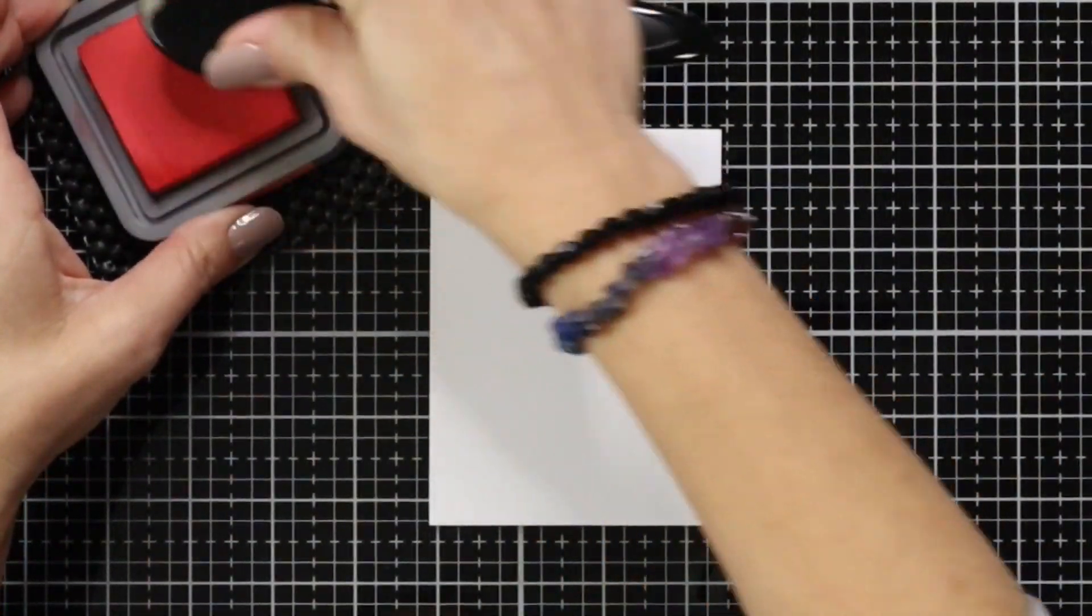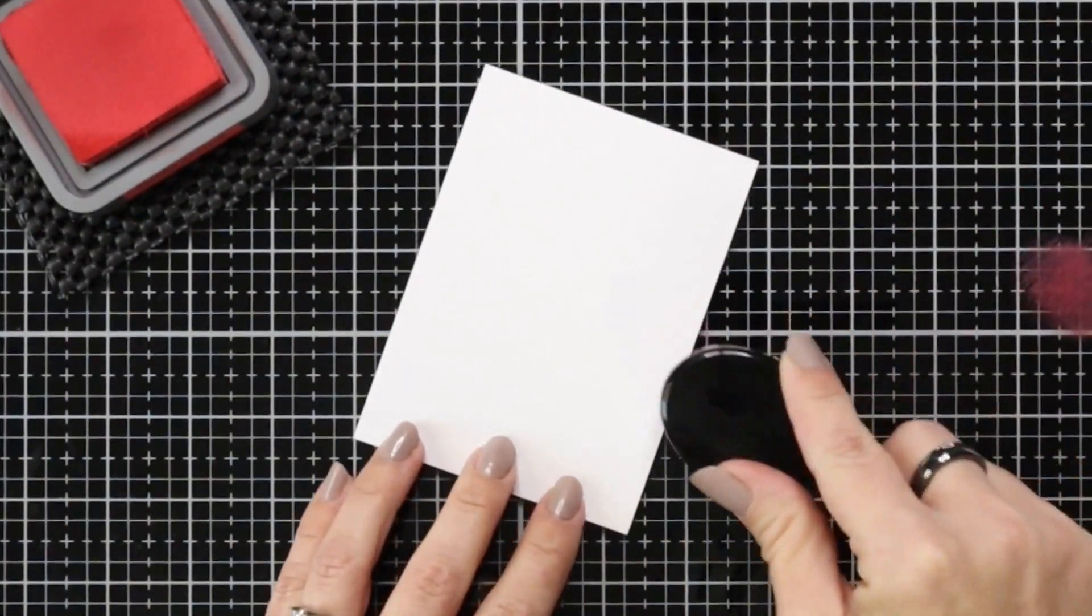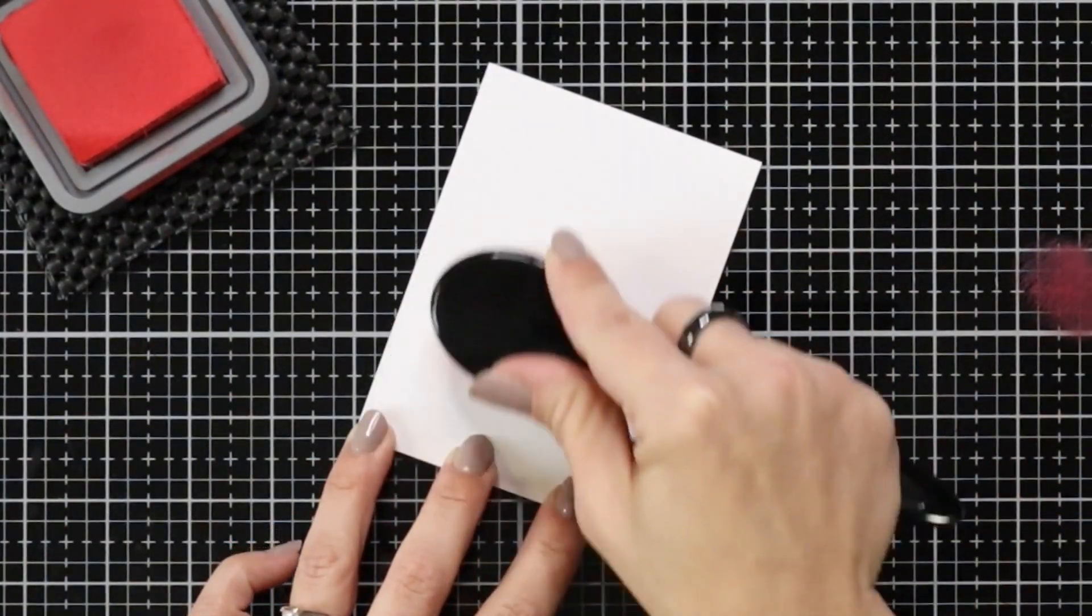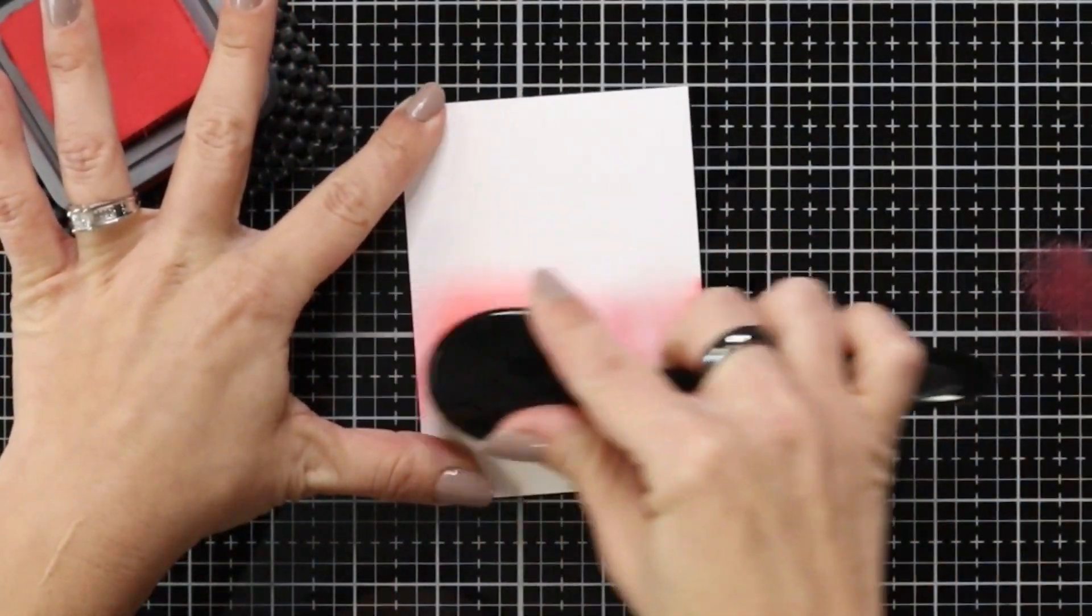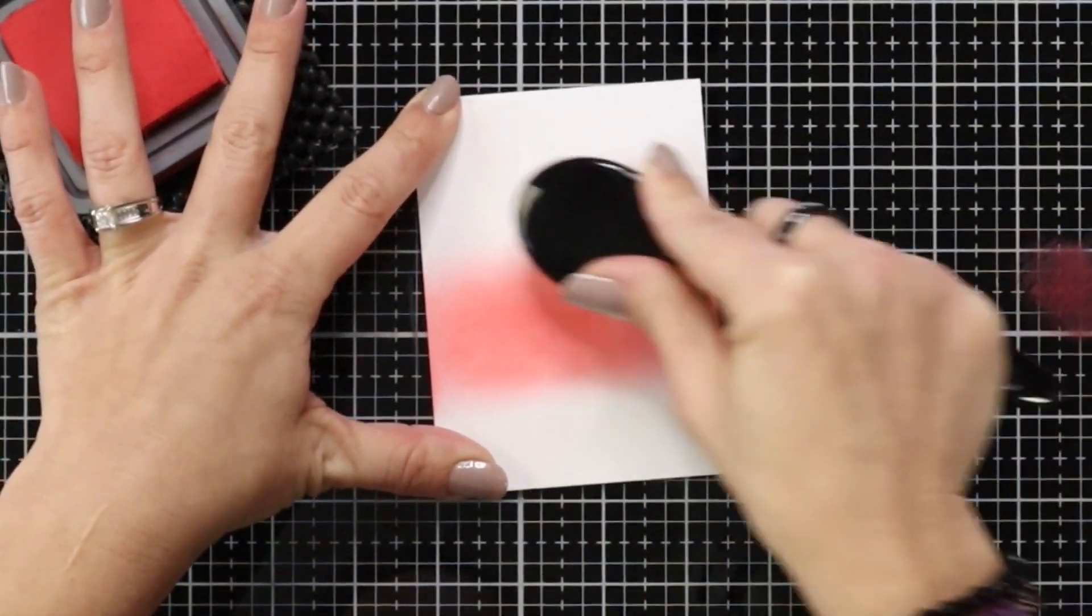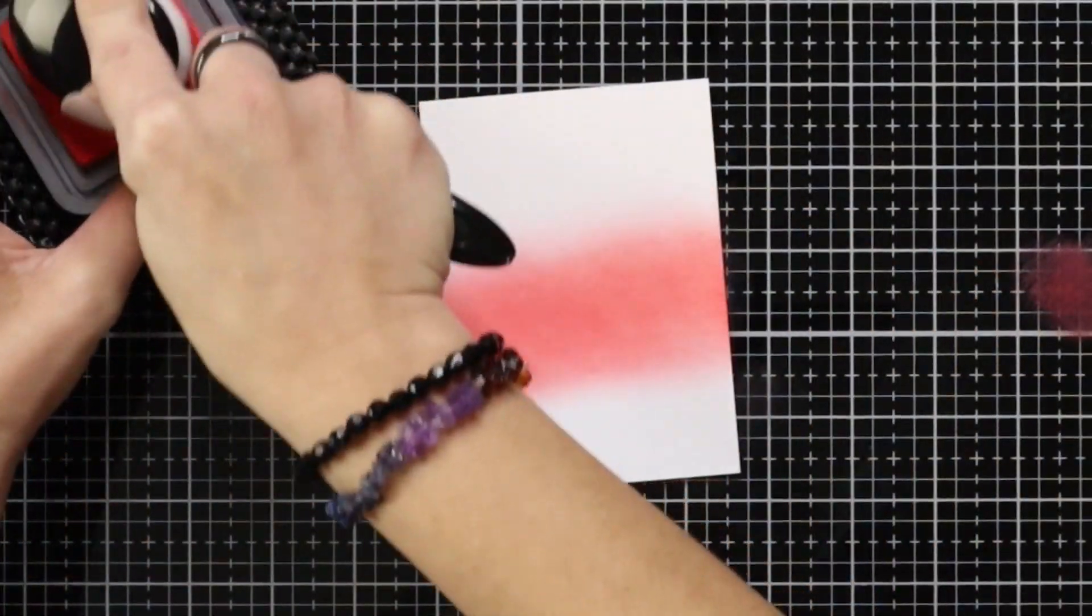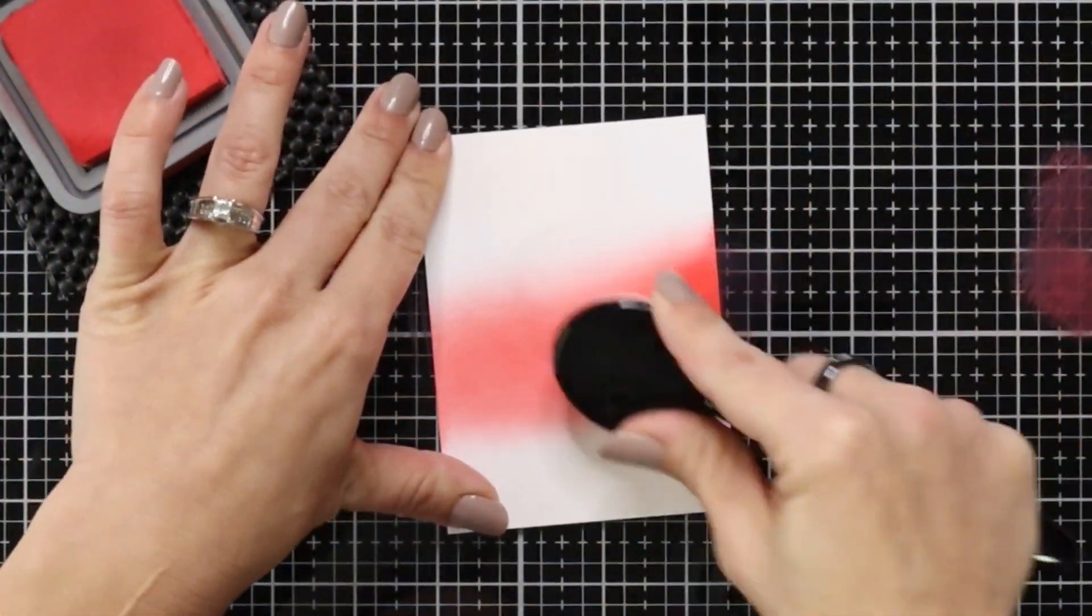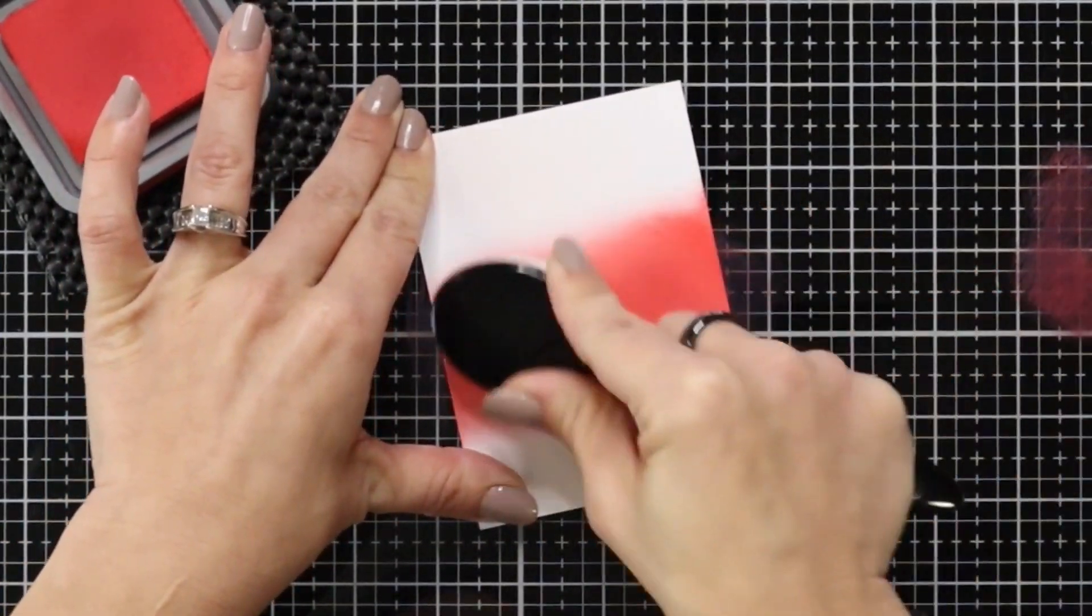I'm going to start off by ink blending my background and this is using the festive berries with a blending brush. Now the cardstock that I'm using here I have trimmed down to three and three quarters by five inches. I thought that was the size I would be leaving it at. I do trim it down later on in the video, but this is the Ranger Heavyweight Cardstock. It is a really nice bright white cardstock and it is really smooth so it is really nice for ink blending.